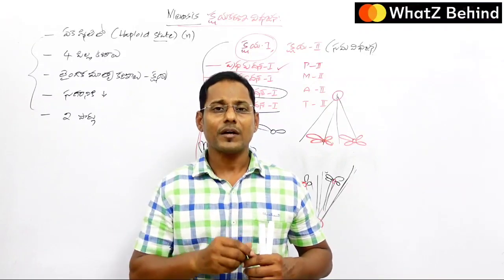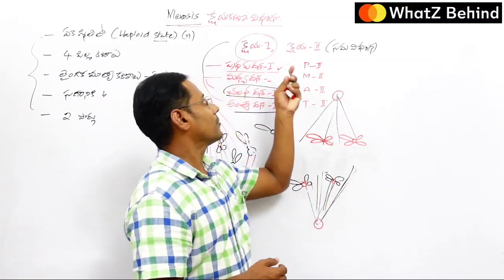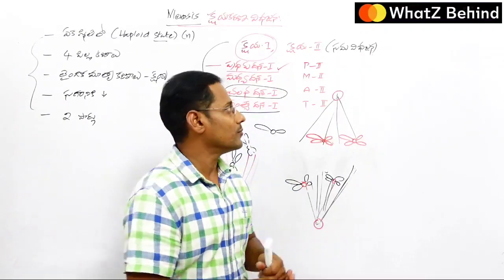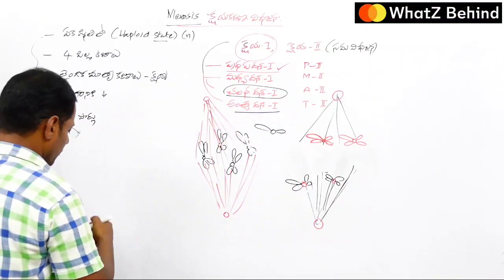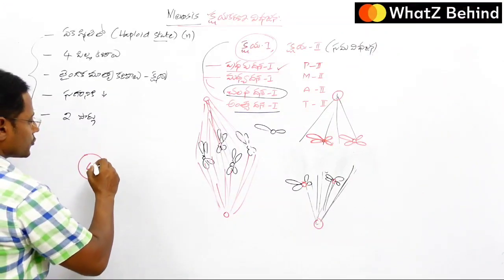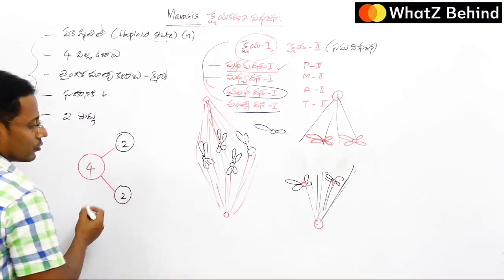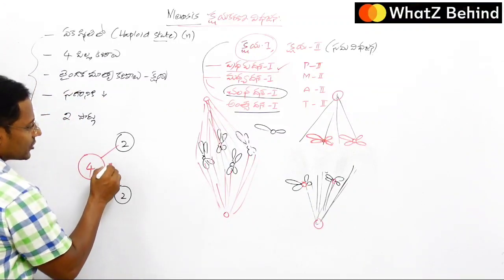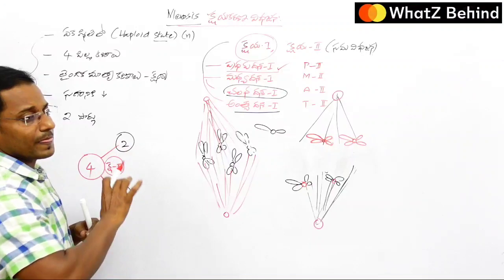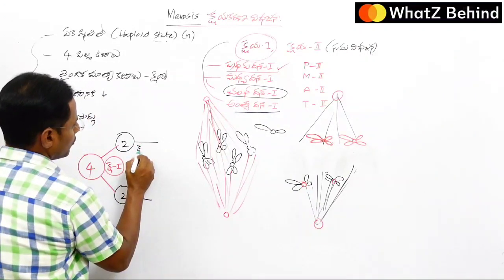So this is the same thing in kshaykarana vibajana II — it is almost the same as meiosis I. In kshaykarana vibajana II, the same phases occur: Prophase II, Metaphase II, Anaphase II, Telophase II. Ultimately, from the original cell, 4 haploid daughter cells are produced.